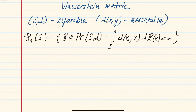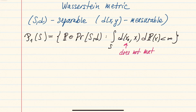So P1(S) consists of all probability measures with respect to which the distance function is integrable. The choice of the point x0 here does not matter by the triangle inequality — you can replace x0 by any other point. So this condition will hold: if it's true for one point, it's true for all points.